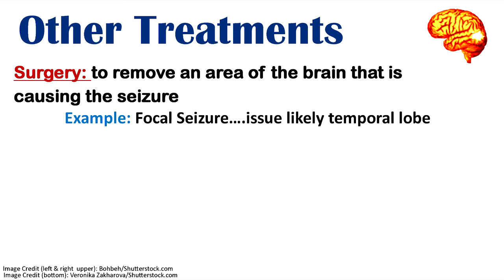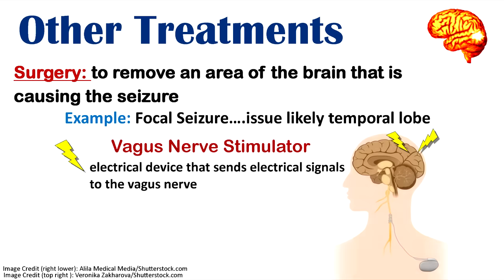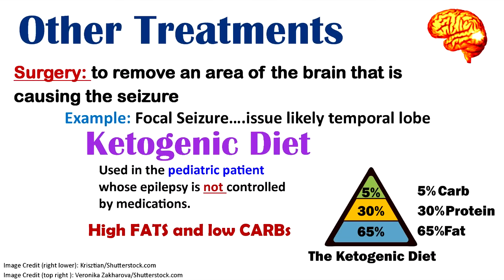Non-medication treatments include surgery, where an area causing seizures can be removed — such as a temporal lobectomy for focal seizures. When medications aren't working, a vagus nerve stimulator can be implanted, sending electrical signals to the vagus nerve. For pediatric patients with epilepsy not controlled by medication, the ketogenic diet — high fat, low carbohydrate — can actually decrease seizure activity.